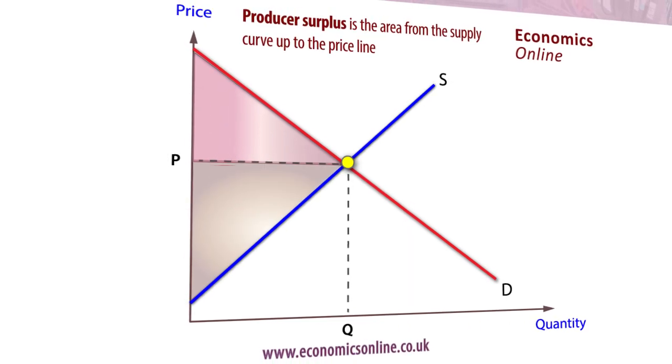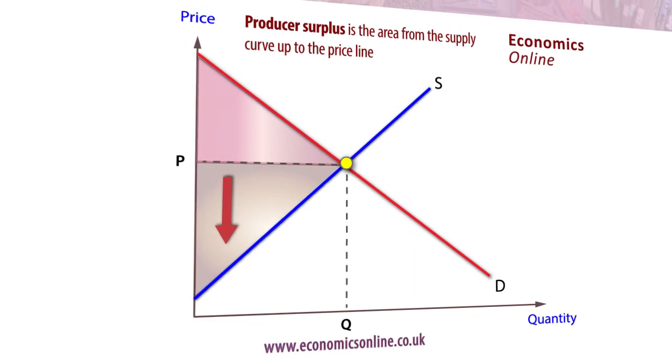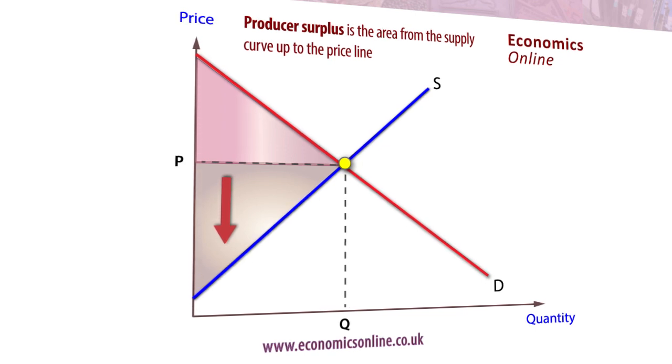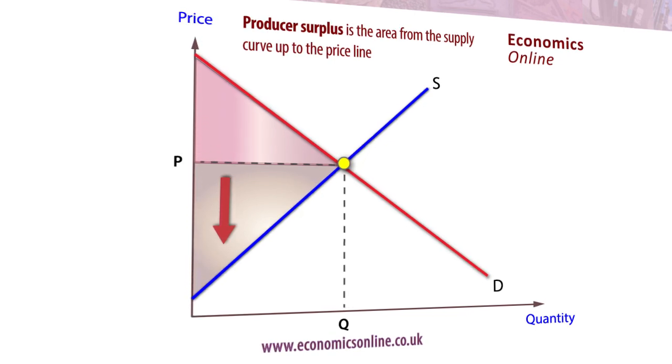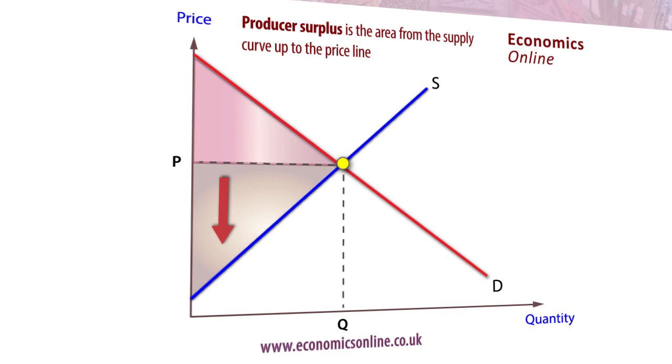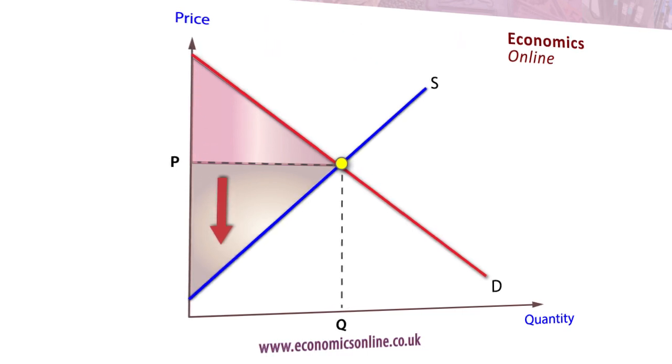Producers may also derive an additional benefit, called producer's surplus. Producer's surplus is the extra revenue that producers get when the price they are prepared to supply at is less than the actual market price.